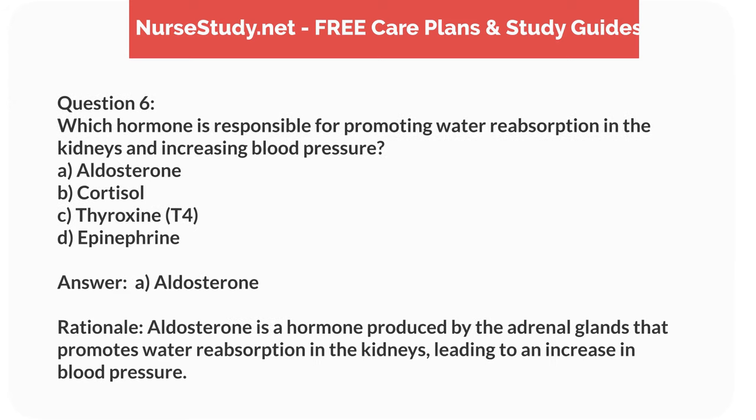Answer: A. Aldosterone. Rationale: Aldosterone is a hormone produced by the adrenal glands that promotes water reabsorption in the kidneys, leading to an increase in blood pressure.